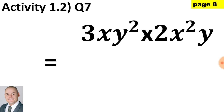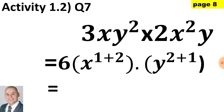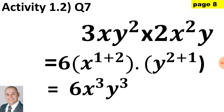In question 7, we would multiply the coefficients of 3 and 2 to give us 6. When multiplying bases that are the same we would add the exponents — ideally working with brackets. Therefore x to the 1 plus 2 multiplied by y to the 2 plus 1, giving us 6 multiplied by x cubed multiplied by y cubed.